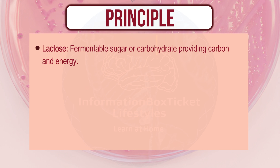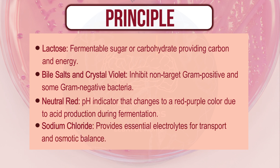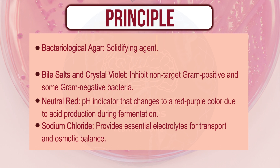Lactose is the fermentable sugar providing carbon and energy. Bile salts and crystal violet inhibit non-target gram-positive and some gram-negative bacteria. Neutral red is a pH indicator that changes to a red-purple color due to acid production during fermentation. Sodium chloride provides essential electrolytes for transport and osmotic balance. Bacteriological agar acts as the solidifying agent.